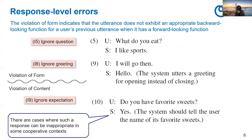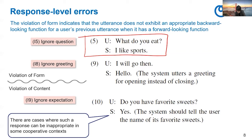These are the error types at the response level. The violation of form in this level indicates that the utterance does not exhibit an appropriate backward-looking function for the user's previous utterance when it has a forward-looking function. As for the violation of form, we have I5 ignored question — for example, the user says 'What do you eat?' and the system says 'I like sports,' which is not answering the question. We also have I8 ignored greeting, where the system ignores the user's greeting — both are violations of form for not responding with an appropriate backward-looking function.